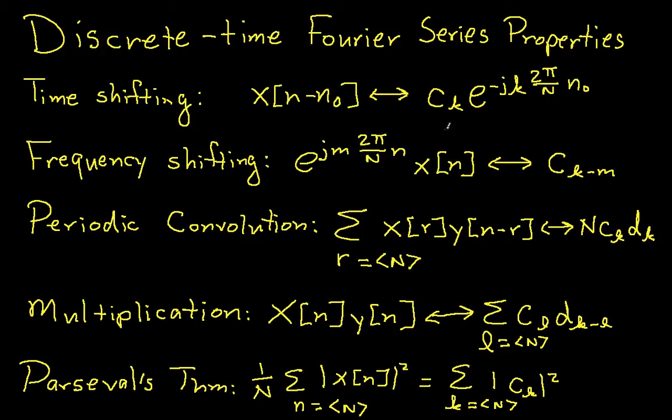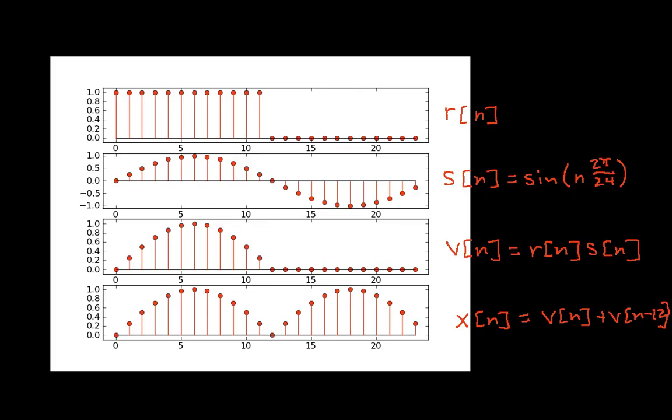So the plan to do this is the following. What I've drawn here, or plotted here, are different waveforms. The waveform whose Fourier series coefficients I want is this one on the bottom. You can see that that's a rectified sine wave. And what we'll do to get there is the following.